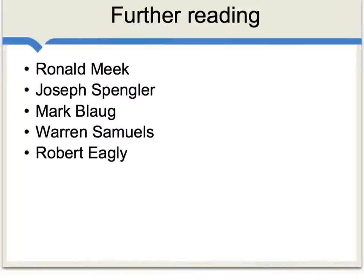For further reading, well, you can, of course, Google Canet and Physiocrats and Tableaux Economiques, and there's plenty on the web. But if you'd like to read some historians of thought on the Physiocrats, the ones I recommend for a start are this list here, Ronald Meek, Joseph Spengler, Mark Blaug, Warren Samuels, and Robert Eagley. You can find their works online. Some of these are gated through JSTOR, but nonetheless, to really dig into the Physiocrats, outside commentary is extremely useful, and those are some of the writers who have done a lot of good work, making Canet and the Physiocrats more intelligible.